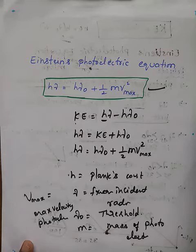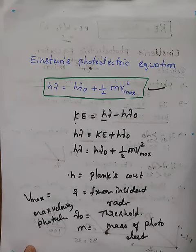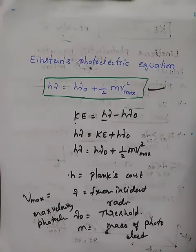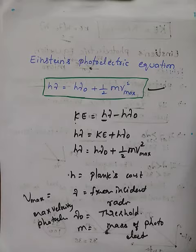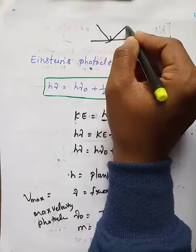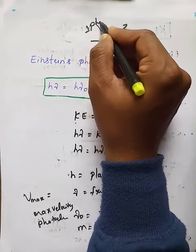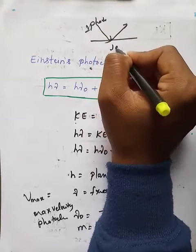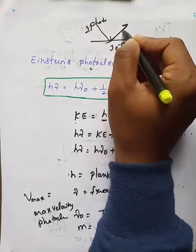From Einstein's explanation about the photoelectric effect, the conclusion is that one photon interacts with only one electron, and that electron is emitted.